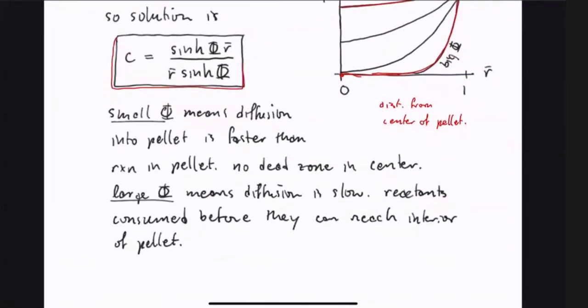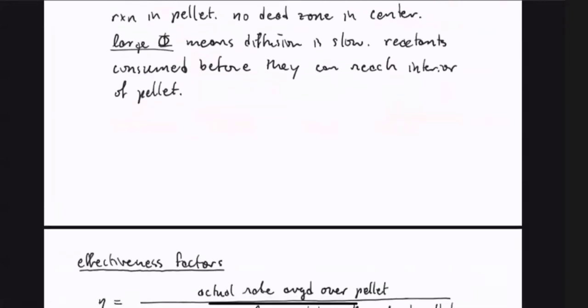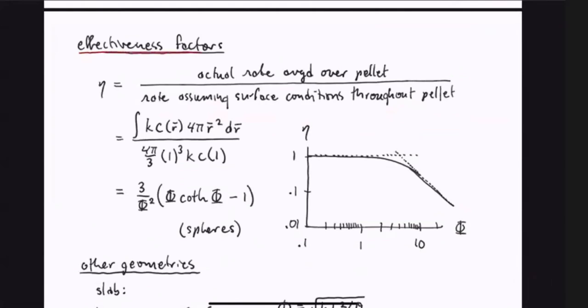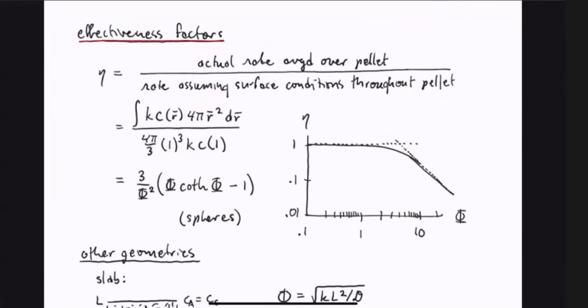It's very convenient to reformulate all of this and come up with a way of absorbing the solutions to these partial differential equations into an effective kinetics. This analysis by Thiele and Zeldovich back in the early 1940s defines something called an effectiveness factor. The effectiveness factor η is defined as the actual rate averaged over the entire volume of the catalyst pellet divided by the rate assuming surface conditions prevail throughout the pellet. For our problem with a spherical catalyst pellet, we integrate k times the concentration with a Jacobian factor over the entire volume. The corresponding quantity if surface conditions prevailed throughout would be 4π/3 times R³ times kCAS.